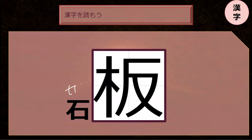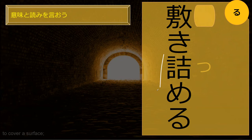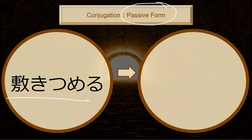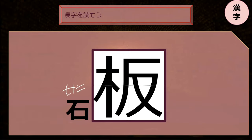So it starts with seki and ends with ban — perfect. Can you read this word? To spread out — and tsumeru is like to cram things onto something, so shikitsumeru means to cover a surface completely. What is the passive form of shikitsumeru — to be covered? The passive adds -rareru, so shikitsumerareru — perfect. And this word started with seki and ended with ban — perfect.